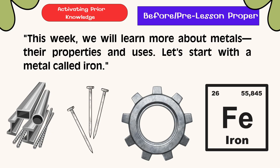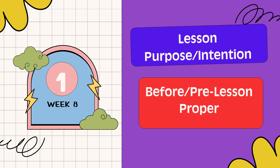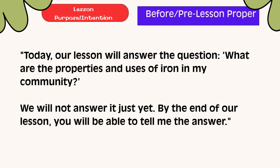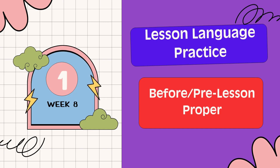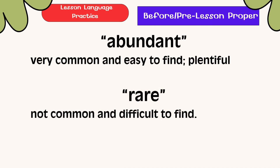Let's start with a metal called iron. Today, our lesson will answer the question: What are the properties and uses of iron in my community? We will not answer it just yet. By the end of our lesson, you will be able to tell me the answer. For lesson language practice — abundance: it is very common and easy to find, or plentiful. Rare: not common and difficult to find.